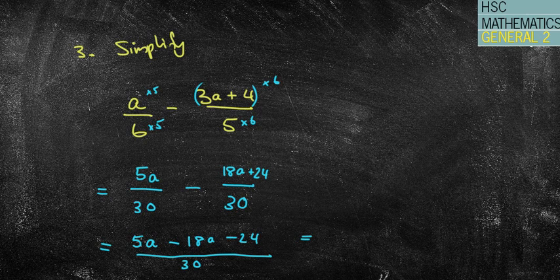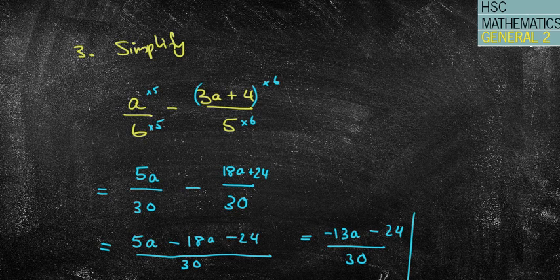I'm now going to subtract the a's. 5 take away 18, that's going to be negative 13a minus 24 all over 30. I can't cancel it down now because I was thinking maybe 2 goes into those two, but it doesn't go into 13. So, nothing else goes into all three. Therefore, that is my final answer. Just be careful about this negative here.